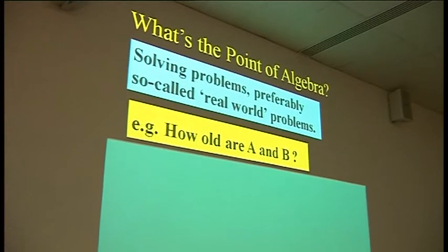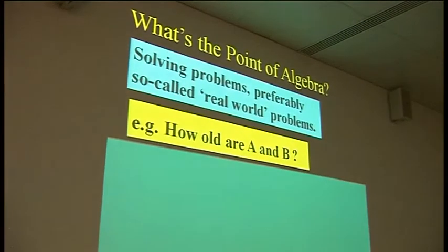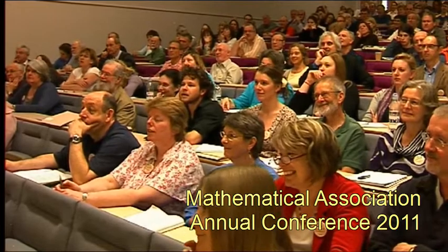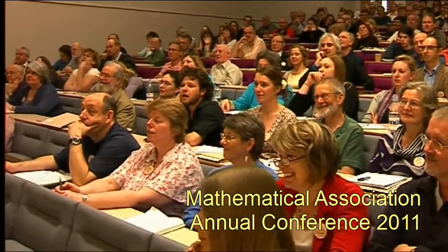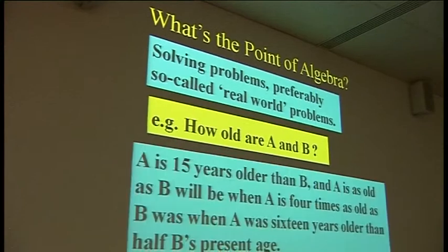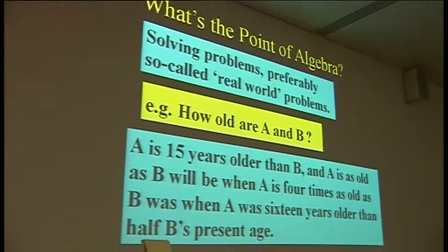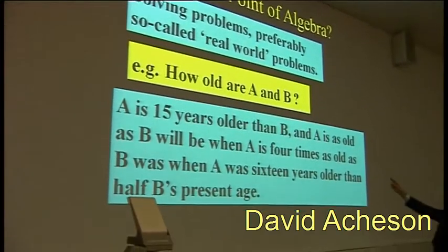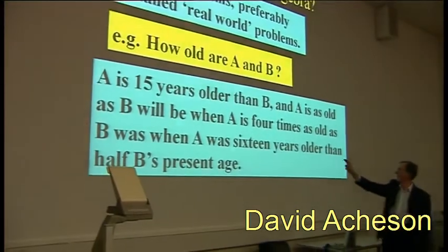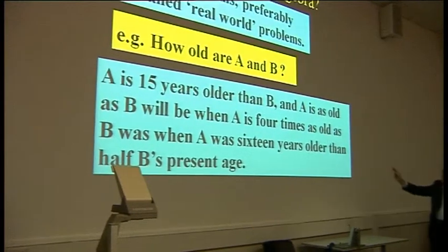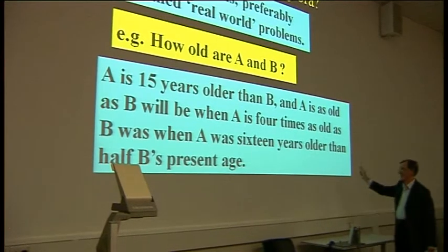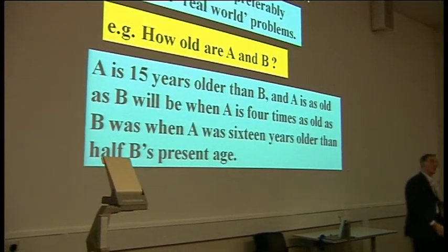Very often you have two characters, called A and B, and you're told obscure information about their ages, and you have to find out the age of each individual one. The kind of problem that you get is this: A is 15 years older than B, and A is as old as B will be when A is four times as old as B was when A was 16 years older than half B's present age.